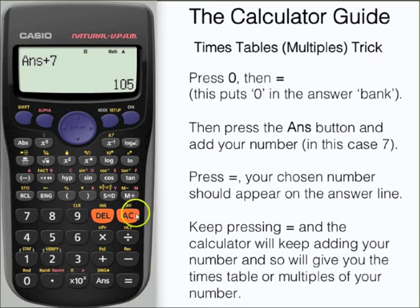Let's have another go at this with a different number. Press AC, then zero and equals to put zero at your start. Then answer plus 13. Let's have a go at the 13 times table. Every time we press equals, we get another multiple of 13.